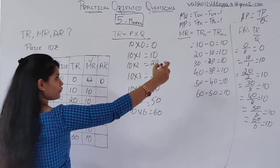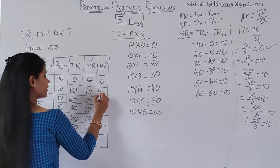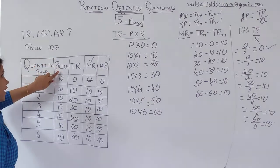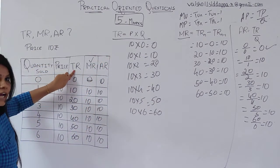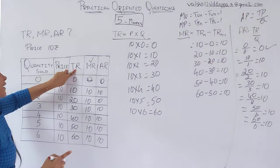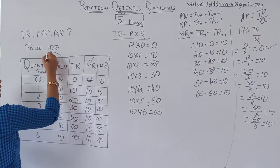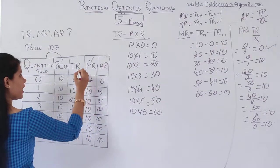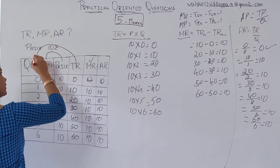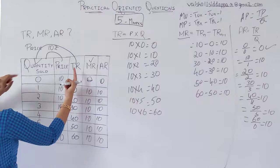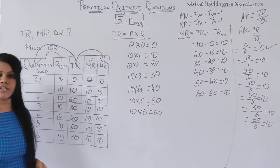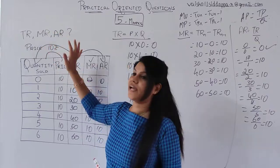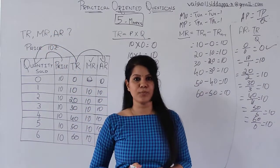So AR is 0, then 10, 10, 10, 10, 10, and 10. To summarize: to find out TR the formula is P into Q — multiply these two. For MR, from the second value keep subtracting the previous one. To find out AR, it is TR divided by quantity. That is how you find out all the missing values — compute TR, MR, and AR. Very easy question. I hope you all learned from this.